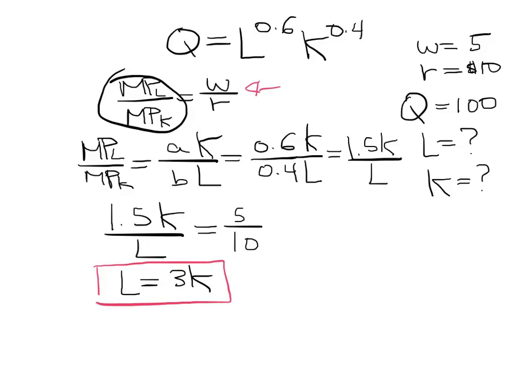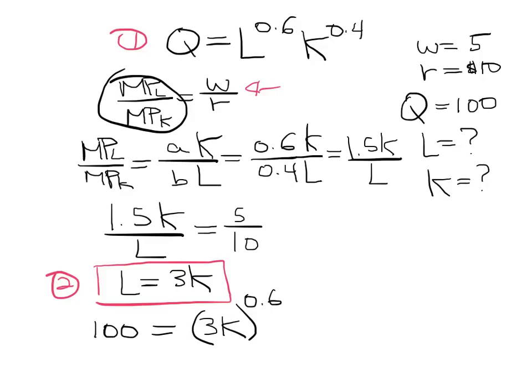Now we have two equations and only two unknowns, because we know Q equals 100. All we have to do is substitute one into the other. Starting with 100 equals — since L is 3K — we put 3K to the power of 0.6 times K to the power of 0.4. We can solve this equation for K.